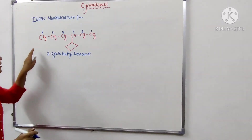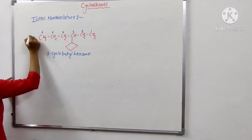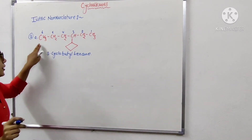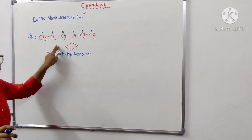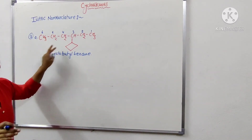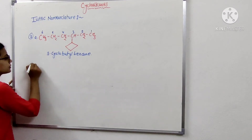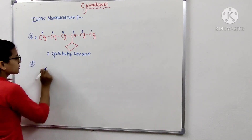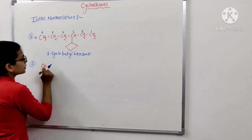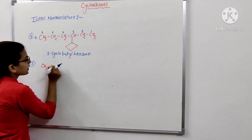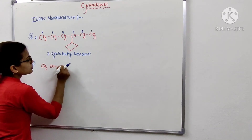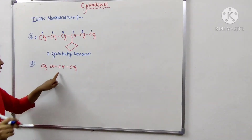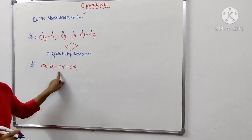This is the first example of IUPAC nomenclature. Now the second example involves a structure with CH3, CH, CH, and CH3 groups.